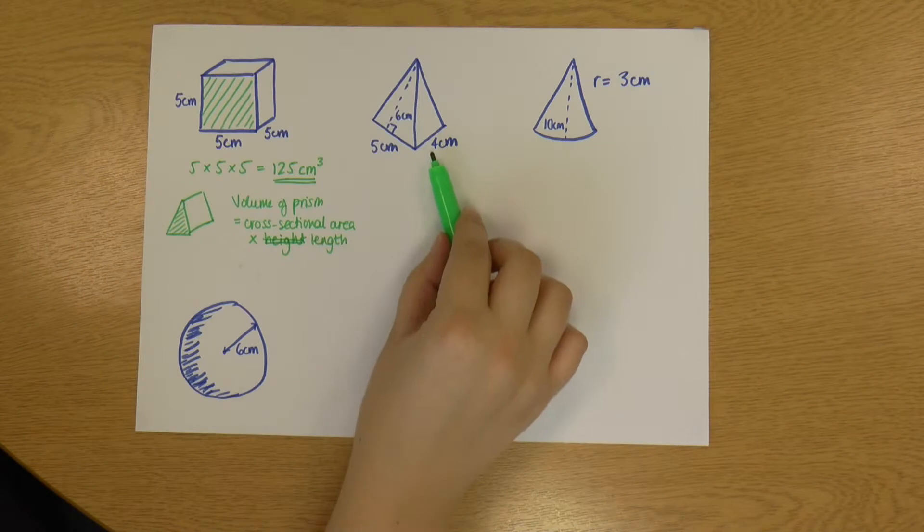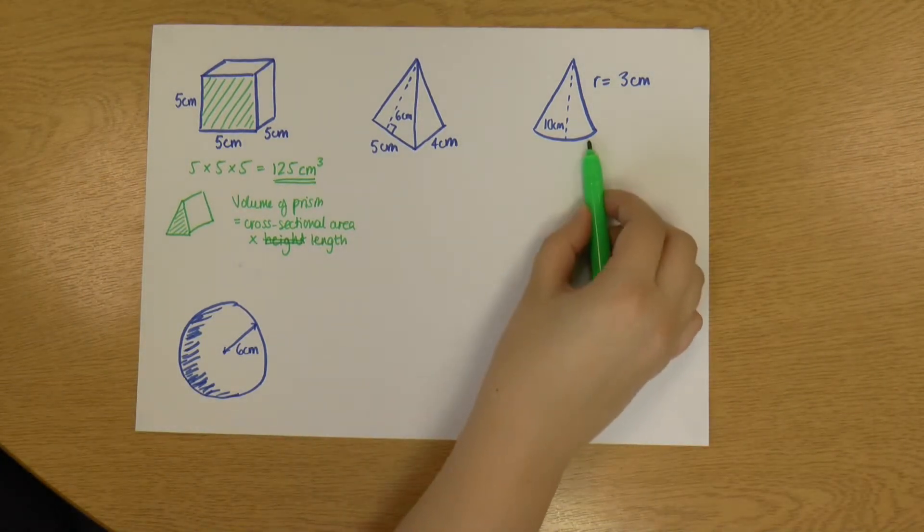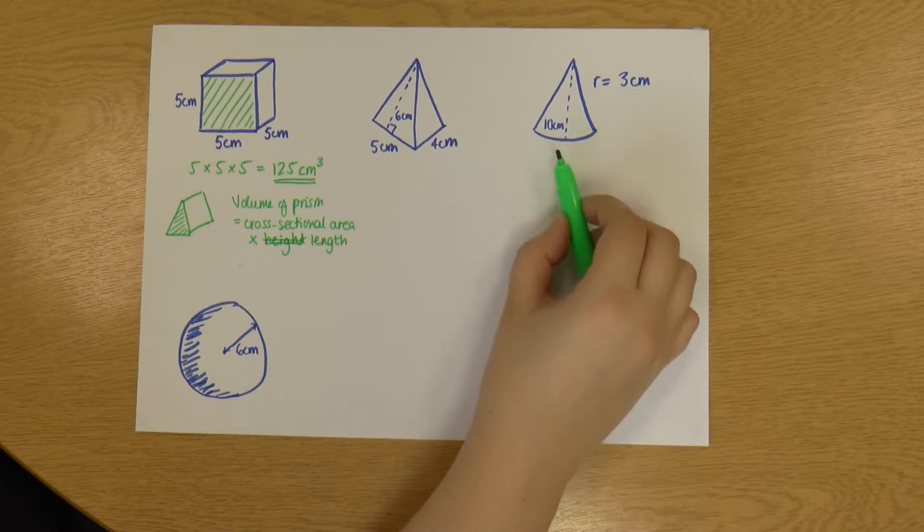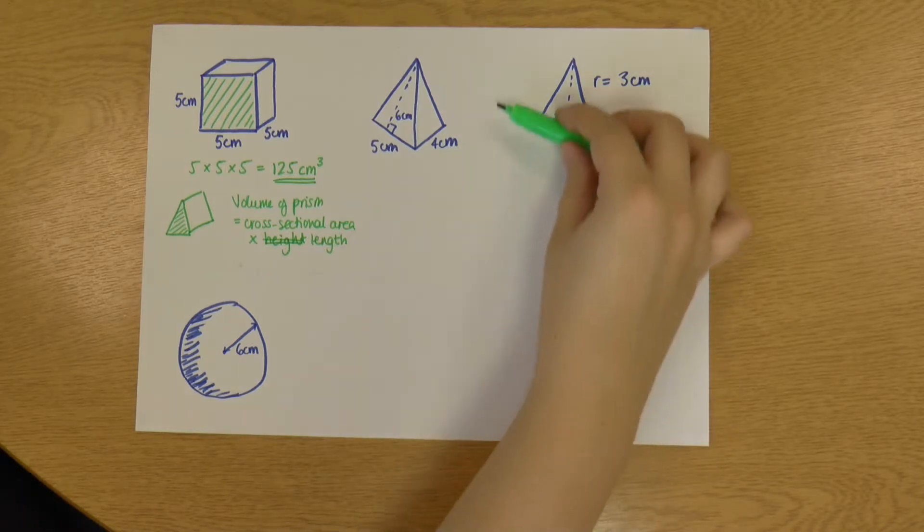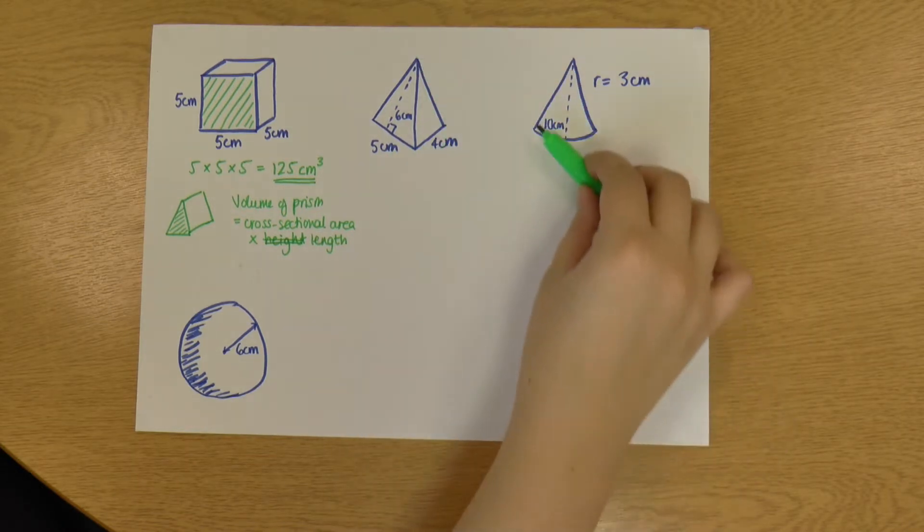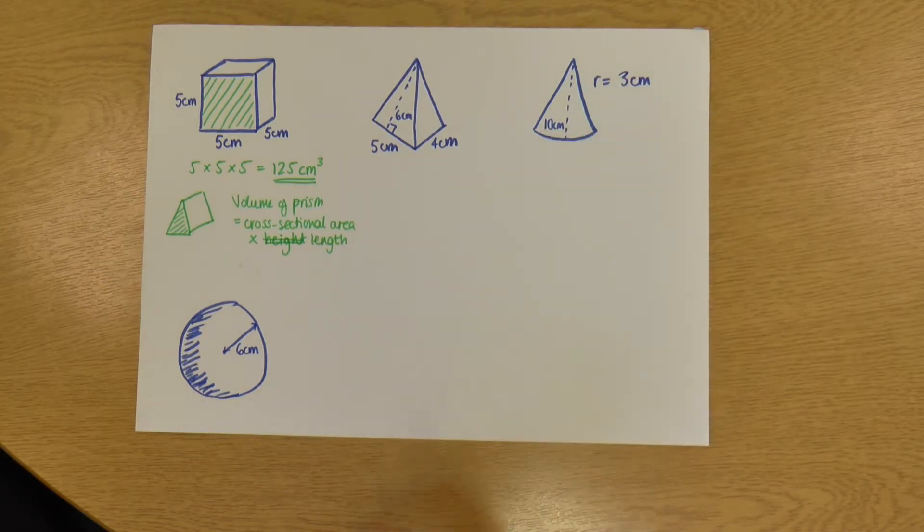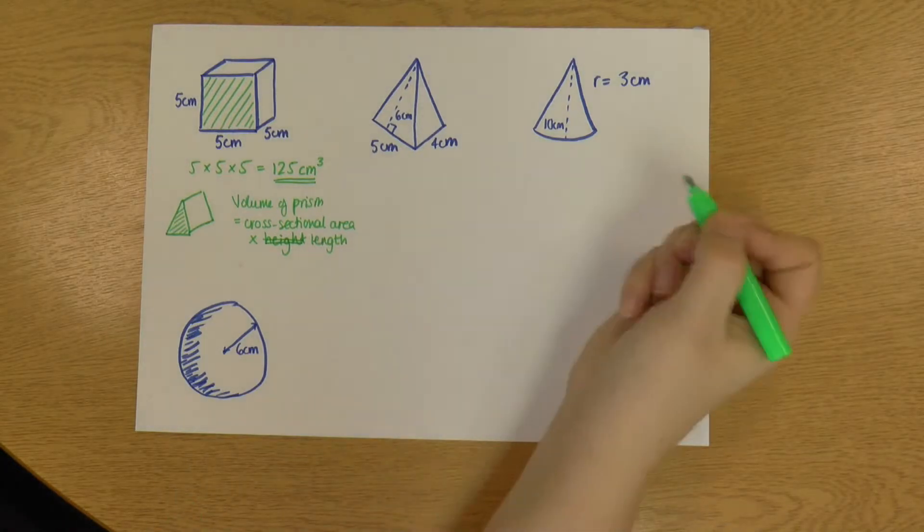Okay, so let's have a look now at a pyramid. And actually, a cone is a type of pyramid. So a pyramid is just a shape that goes upwards to a point. So my first pyramid is a rectangular shape that goes up to a point. And my second shape is a circle that goes up to a point. So they both actually follow the same rule.